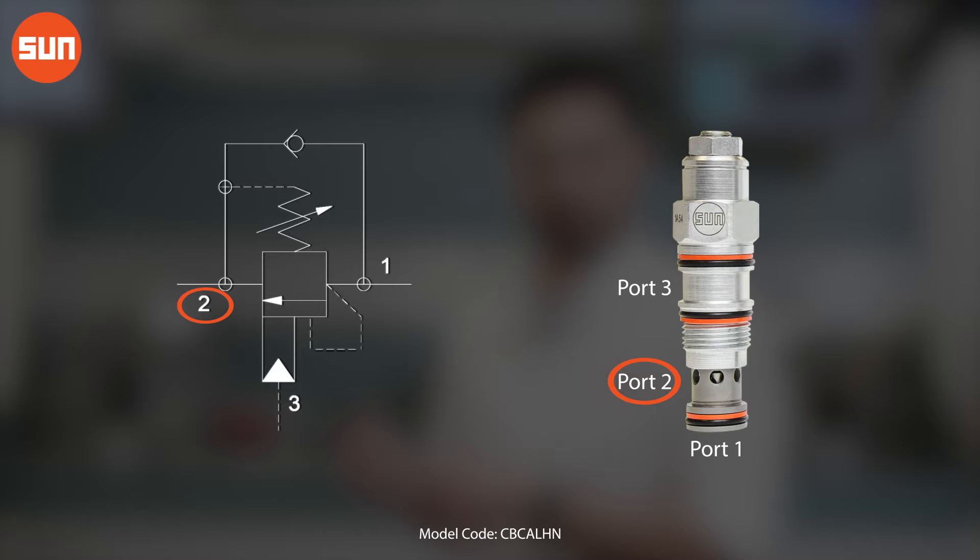In the case where we want oil to flow from port 2 to port 1, we flow over the valve's free flow check at low pressure and bypass the restrictive parts of the valve.